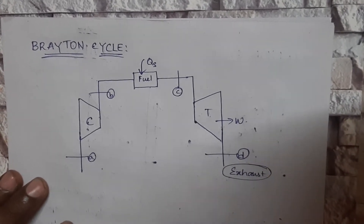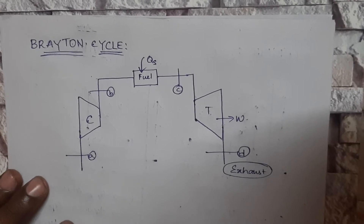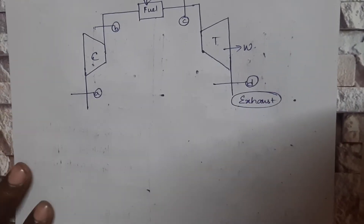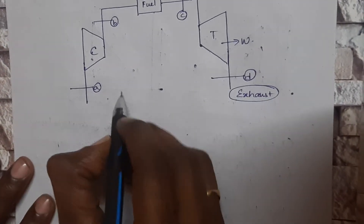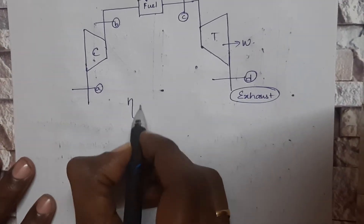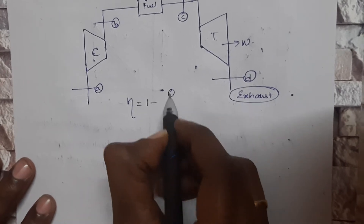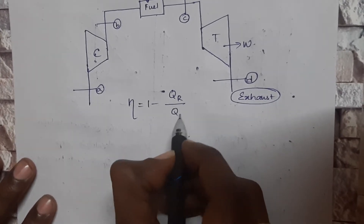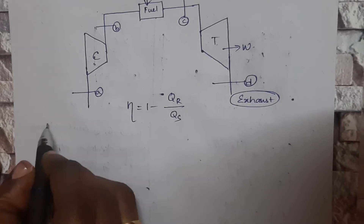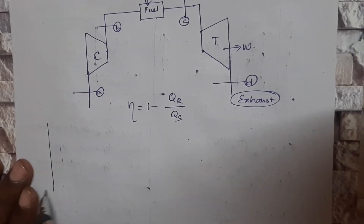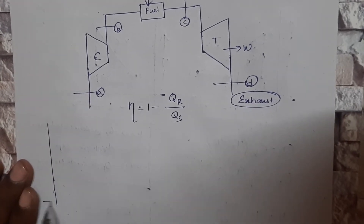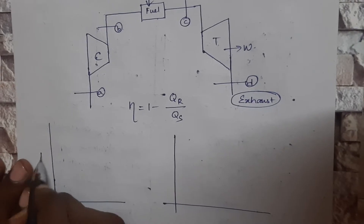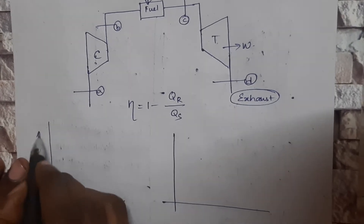So this is the basic idea of a Brayton cycle. For the Brayton cycle, we will be using the formula: efficiency = 1 minus qr by qs. To understand what qr and qs are, we first need to understand the PV and TS diagram for a Brayton cycle.